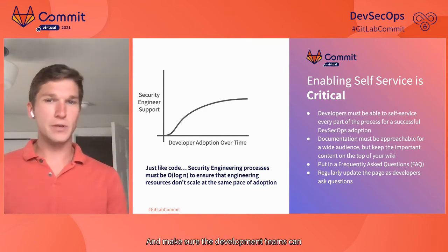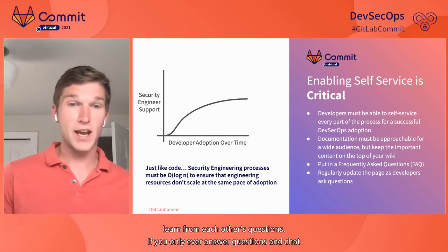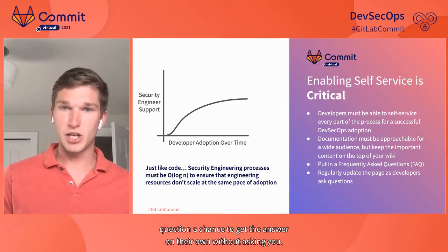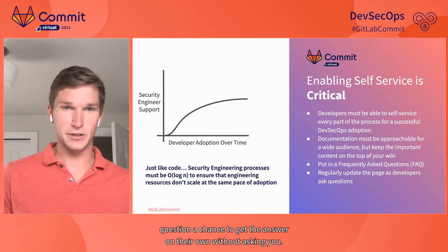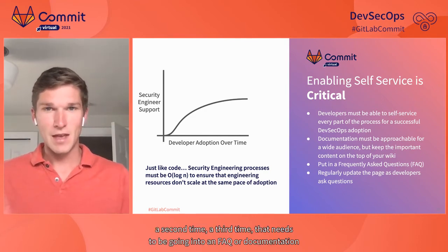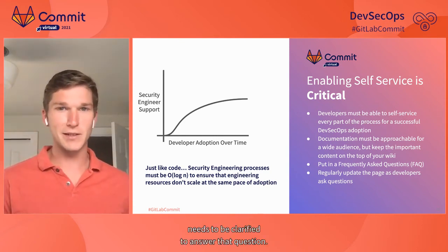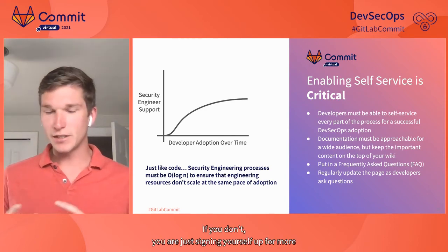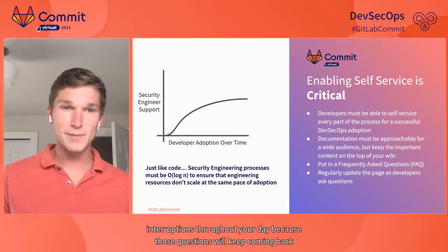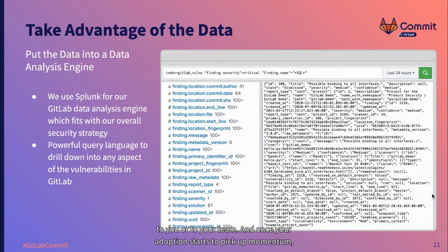Make sure the development teams can learn from each other's questions. If you only ever answer questions in chat channels or virtual meetings, you don't give a developer with the same question a chance to get the answer on their own. Every time you get asked the same question a second or third time, that needs to go into an FAQ or documentation needs to be clarified to answer that question. If you don't, you are signing yourself up for more interruptions, because those questions will keep coming back. And once your adoption starts to pick up momentum, get the data into a proper data analysis engine.